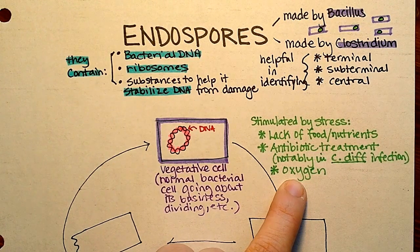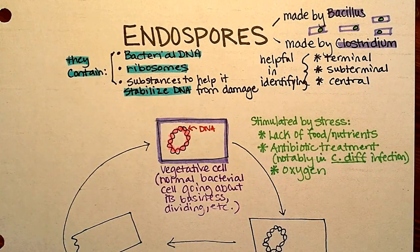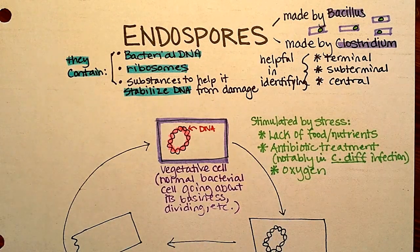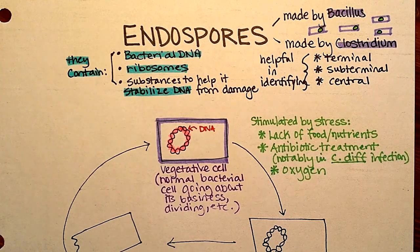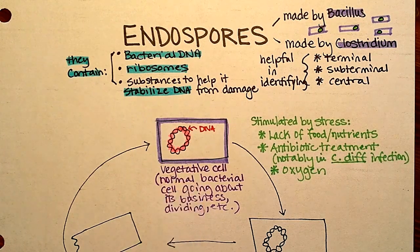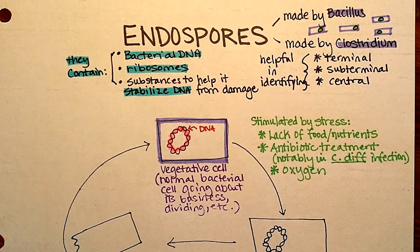For example, in Clostridium perfringens, which can cause gas gangrene, if a wound is cleaned out and exposed to a lot of oxygen, the C. perfringens living in a vegetative state might form endospores. Those endospores could then fall onto the ground and be picked up by someone else — it's a protective mechanism to survive.